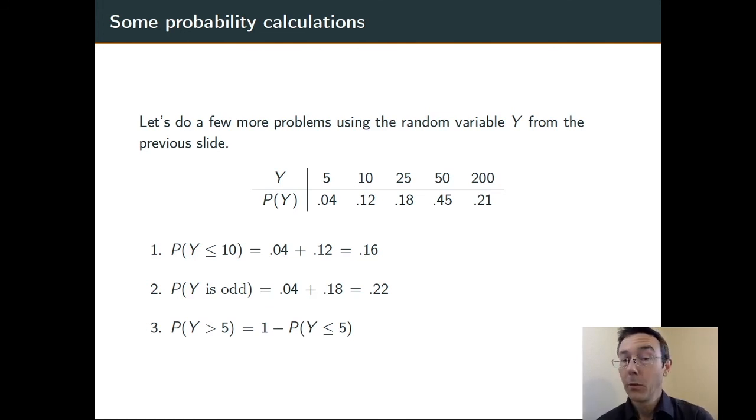The probability that Y is less than or equal to 5 is 0.04, so overall I'm getting 1 minus 0.04, otherwise known as 0.96.